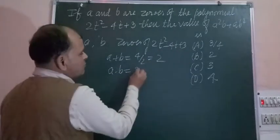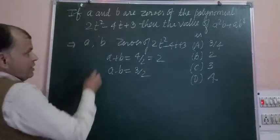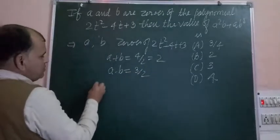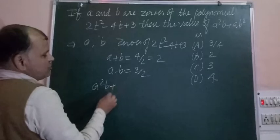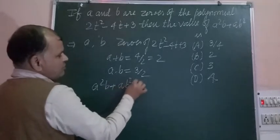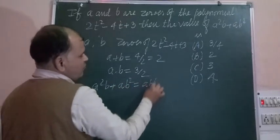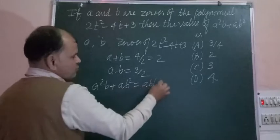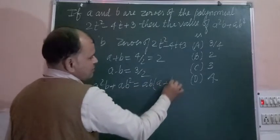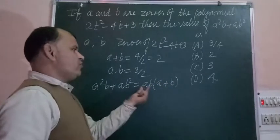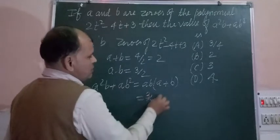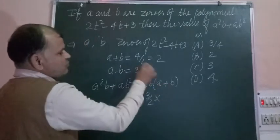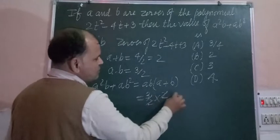It is given that we want to find out the value of A² + AB². Then we take AB common from these two terms, so this is A here and B here, and this is the product of zeros which is 3/2, and this is the sum of zeros which is 2. So 2 × 3/2, it has simply got 3.